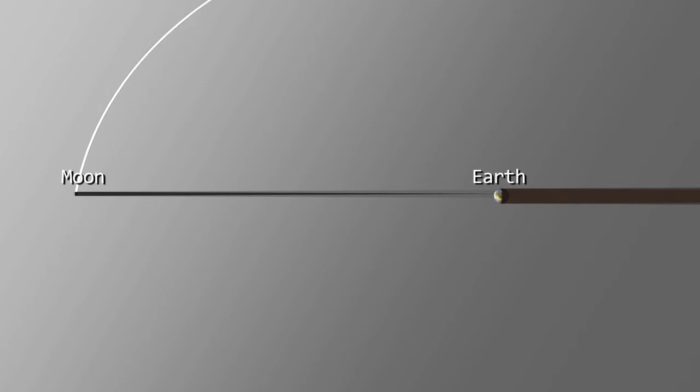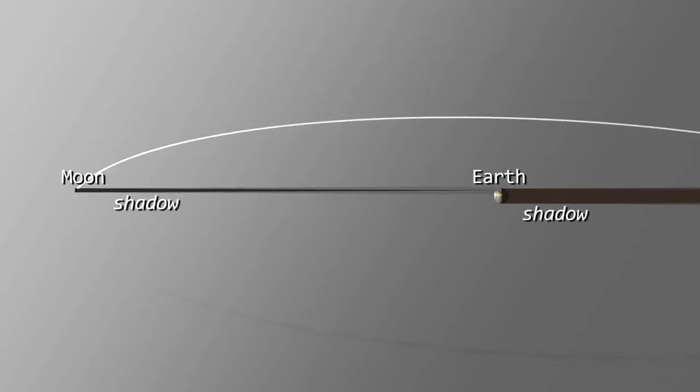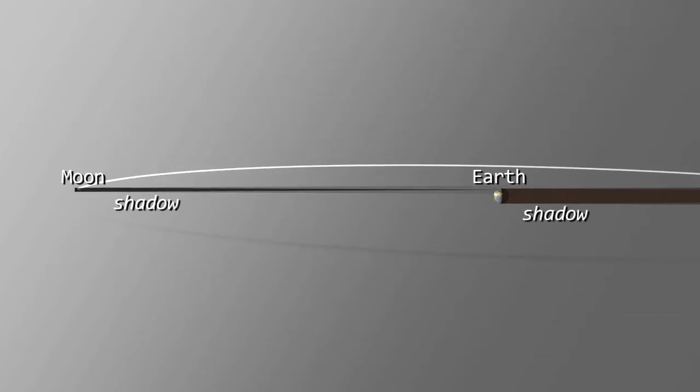First, we have the Moon's orbit leading up to the eclipse. Here, the Earth, Moon, and shadows in orbit are all to scale.